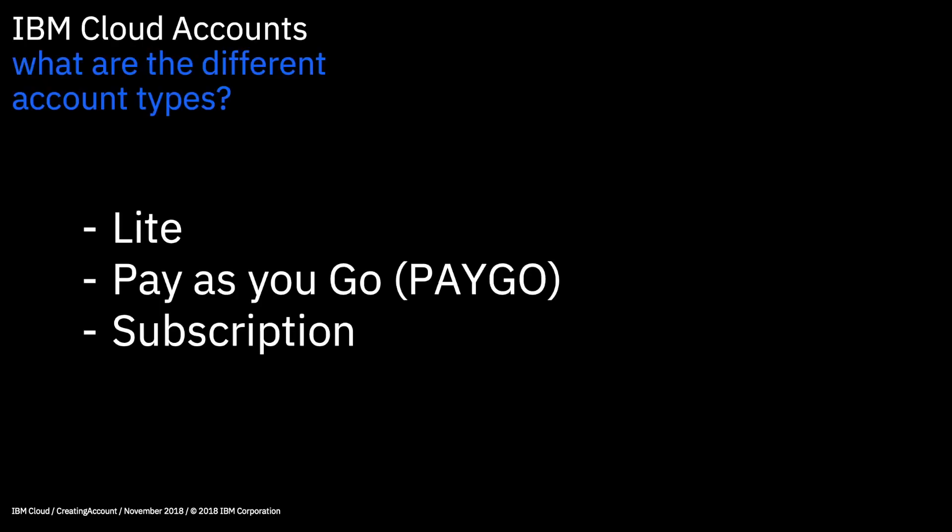These are the names of the different account types in IBM Cloud. We have Lite, Pay-as-you-go or PAYGO, and then a Subscription account. Let's go into each of those in a bit more detail.